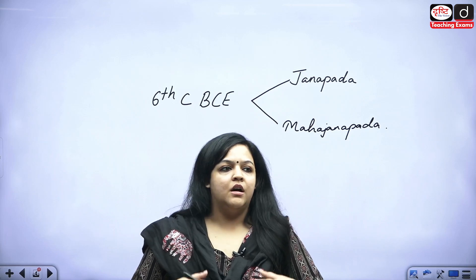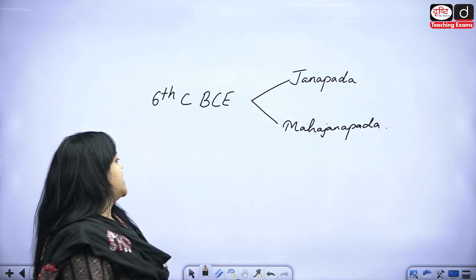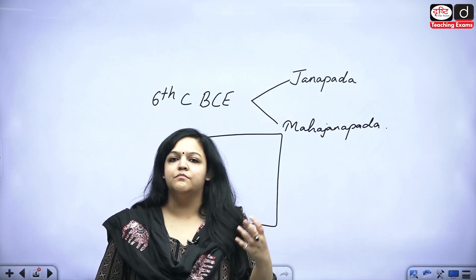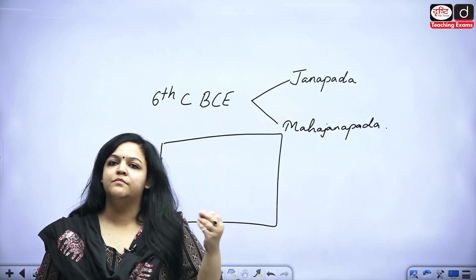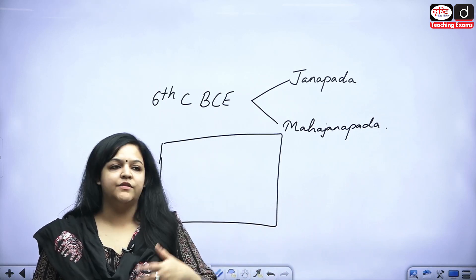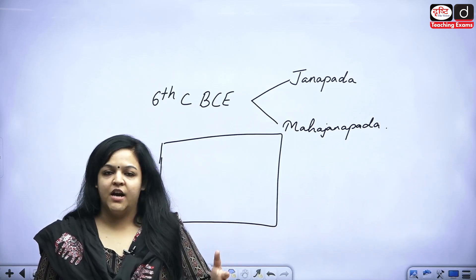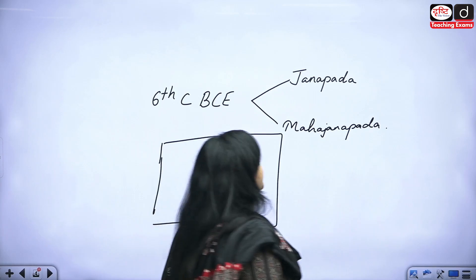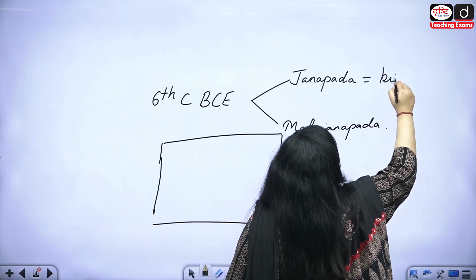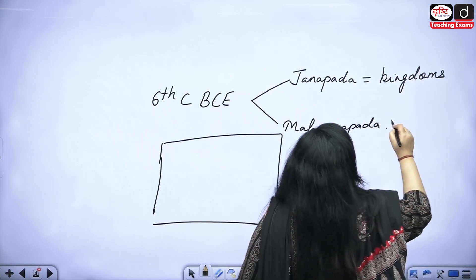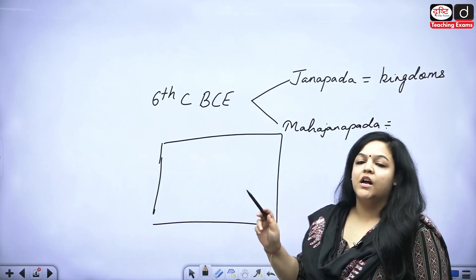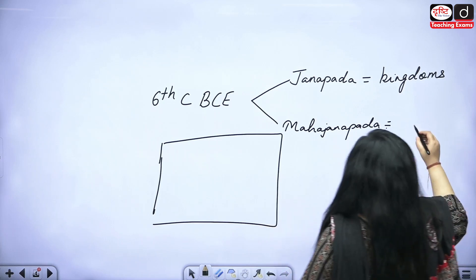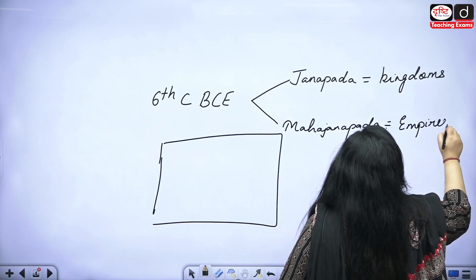Geographically and politically, suppose this is my empire — my empire is obviously made of small kingdoms, just like the Mauryan Empire was made of small kingdoms: Kalinga, Patliputra, Rajgriha, Suvarnagiri, Tosali. These small kingdoms can be equated with Janpads, and when these kingdoms combine together to form a huge empire, that can be equated as a Mahajanpad.